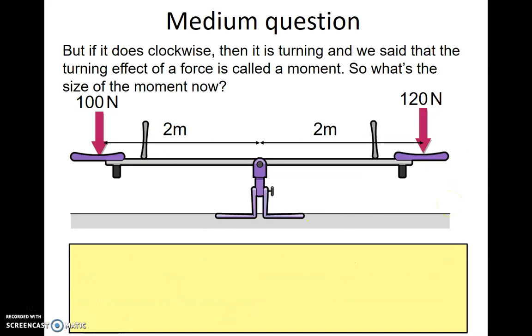Medium question. But if it does turn clockwise, then it is turning. And we said that the turning effect of a force is called a moment. So what's the size of the moment now? Well, we have an anti-clockwise moment of minus 200 newton meters over here. We have a clockwise moment of 120 times 2, which is 240 newton meters. This is a plus because it's clockwise.